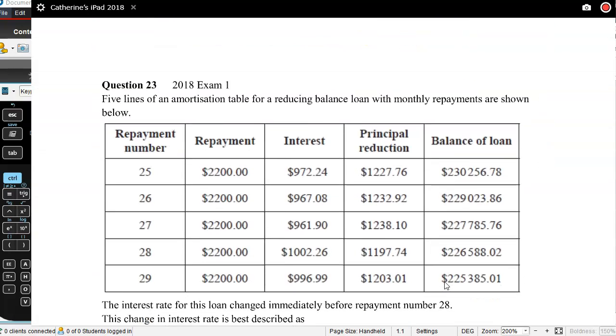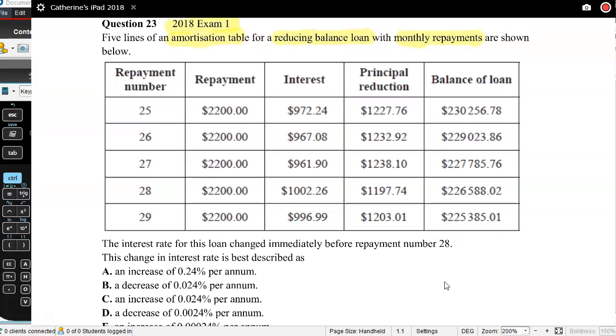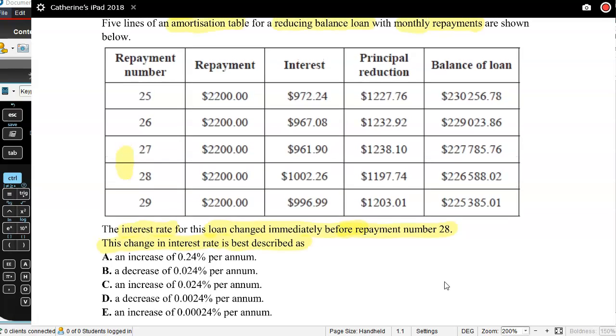Let's look at the next one. This is from 2018 exam. We've got five lines here, a snapshot of an amortization table for a reducing balance loan with monthly repayments. The interest rate for this loan changed immediately before repayment number 28. This change in interest rate is best described as, okay. So in other words, something has gone on between repayment 27 and repayment 28, and that thing is there's been a changing interest rate. So what do I need to do? I need to figure out what was the interest rate before then and what's the interest rate after, and then look at what that change is.